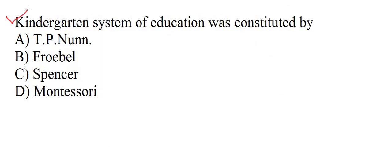This is a very popular question that comes in exams many times — you may have seen it repeated in videos. It is very important. The kindergarten system of education was constructed by Froebel. You must always remember this name — only he created this system. Option B is the right answer. Don't skip this question because these are free marks that will help you score well.